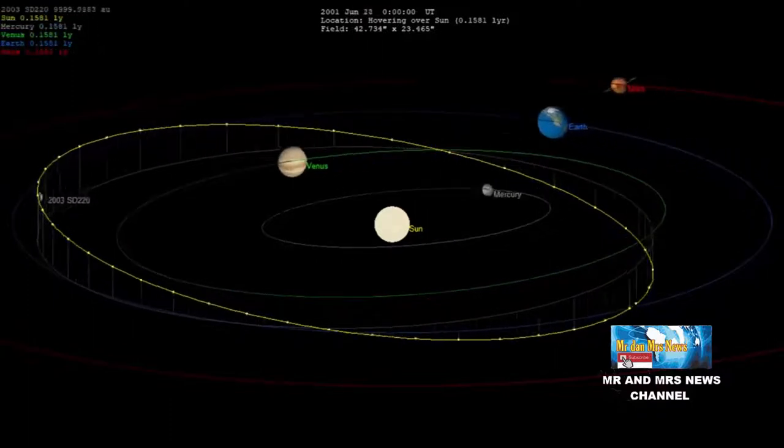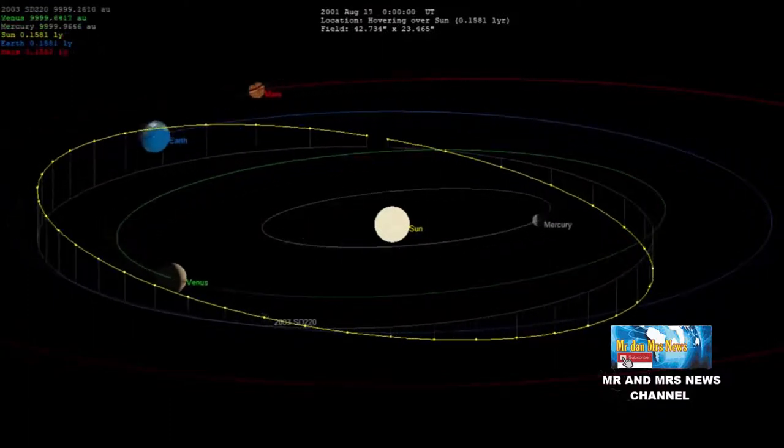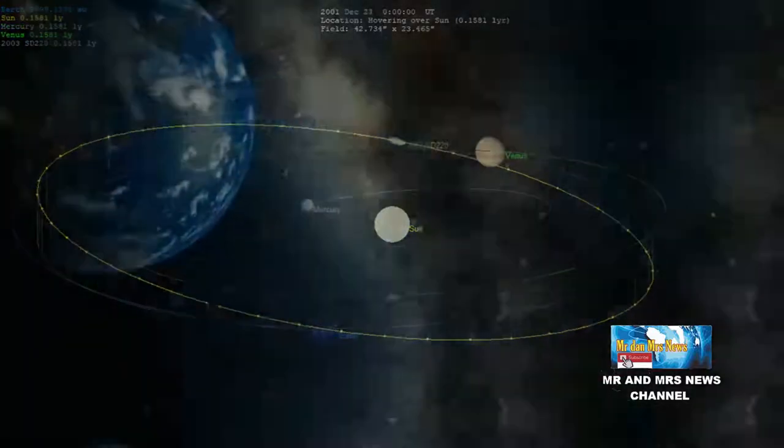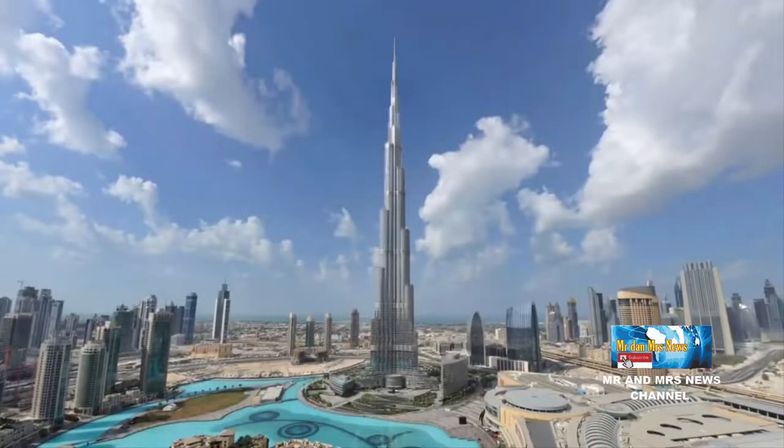Asteroid yang akan mendekati bumi itu bernama 2003 SD220, memiliki diameter sekitar 791 meter. Asteroid itu hampir setinggi dengan Burj Khalifa di Dubai, bangunan tertinggi di bumi.